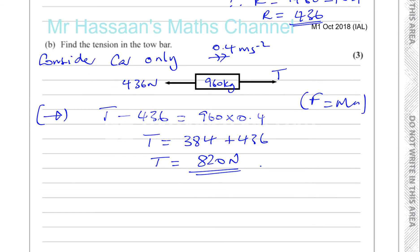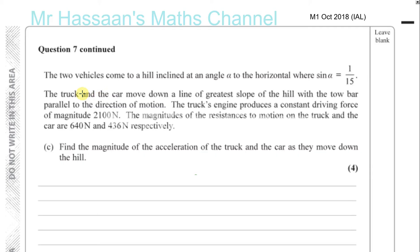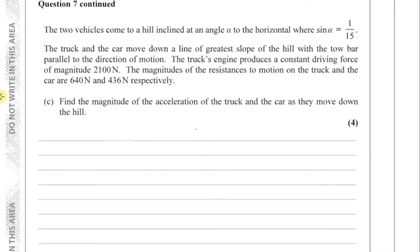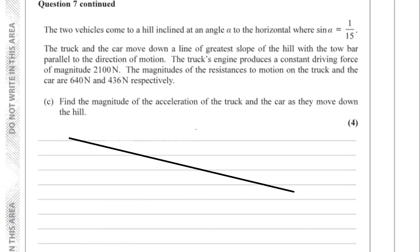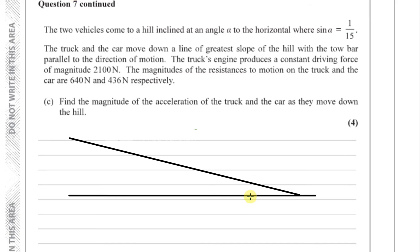That's part B. Then part C says the two vehicles come to a hill inclined at angle alpha to the horizontal where sine alpha is 1 over 15. The truck and the car move down the line of greatest slope of the hill. The truck's engine still produces a constant driving force of 2,100 newtons, and the resistances on the truck and the car are 640 and 436 respectively. We take this as one whole system again as we did before.